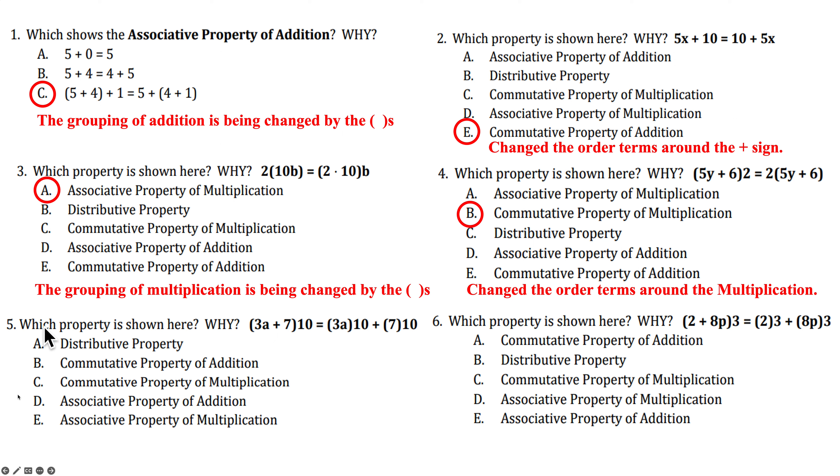All right. 5. Which property is shown here? We have 3A plus 7 in parentheses multiplied by 10. Then all of a sudden we have two 10s. One 10 is being multiplied to 3A. The other 10 is multiplied to the 7. This is your distributive property. That's A. Because the 10 was multiplied to both terms in the parentheses. Let's see. 6. Which property is shown here? We have 2 plus 8P times 3. The 3 is multiplied to the 2 and to the 8P. Another distributive property. 3 was multiplied to everything on the inside.